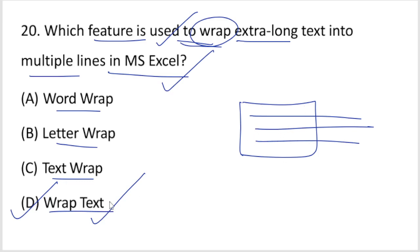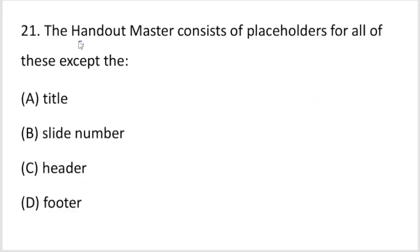Question 21: The handout master consists of placeholders for what? All of these except one. Options include slide number, image, and page numbers.